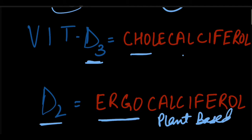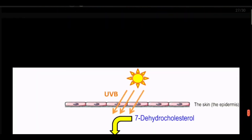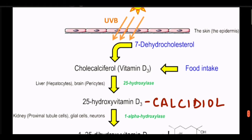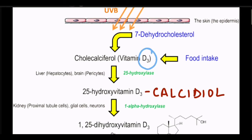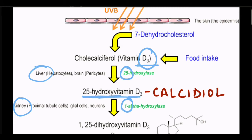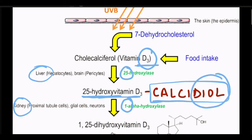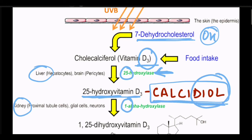Cholecalciferol (D3) is animal-based. After its formation, it undergoes a first 25-hydroxylation in the liver, converting D3 into 25-hydroxy Vitamin D3, also known as calcidiol. The 'diol' suffix is used because the initial 7-dehydrocholesterol already had one hydroxyl group, and now a second hydroxyl group has been added via 25-hydroxylation in the liver.